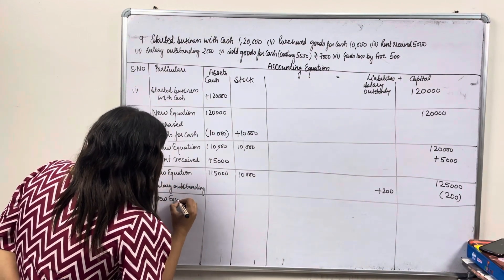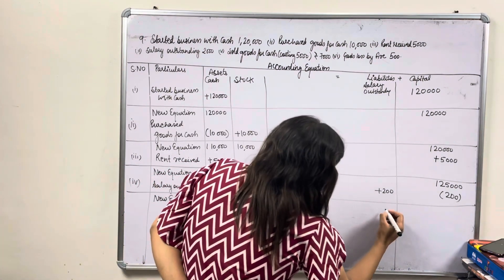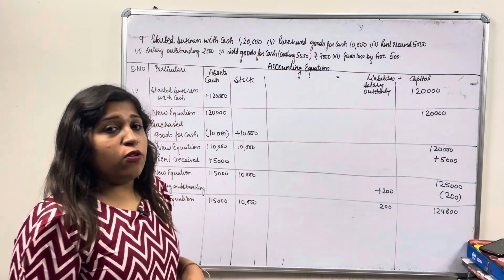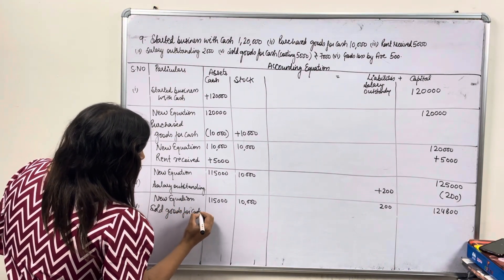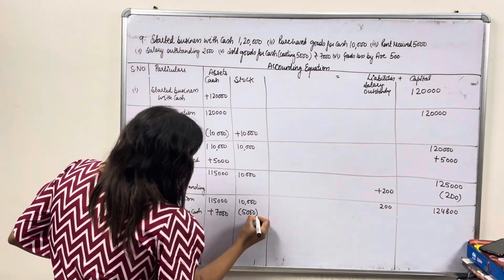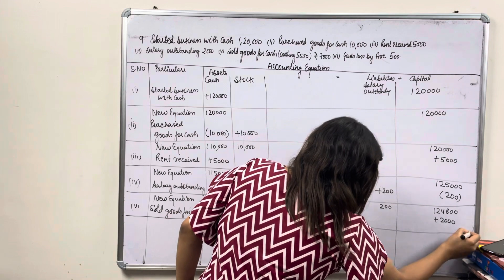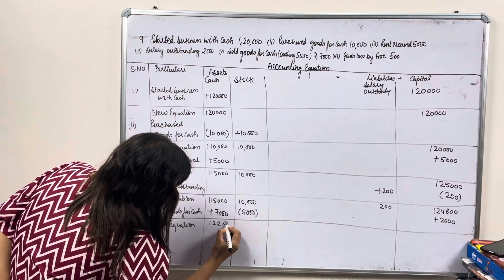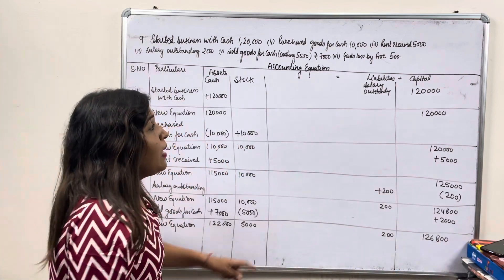This chapter is very lengthy compared to previous chapters. New equation: cash 1,15,000, stock 10,000, liabilities 200, capital 1,24,800. Fifth transaction: sold goods for cash — cost 5,000, sold for 7,000. Cash plus 7,000, stock minus 5,000, profit 2,000 added to capital. New equation: cash 1,22,000, stock 5,000, liabilities 200, capital 1,26,800.